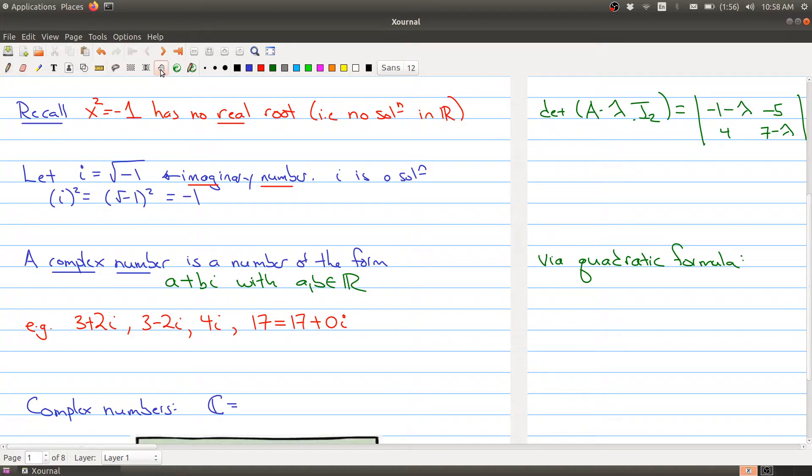Just like we have a notation for the real numbers using capital R, for the complex numbers we use capital C. This is the set of all complex numbers where a and b are real numbers.